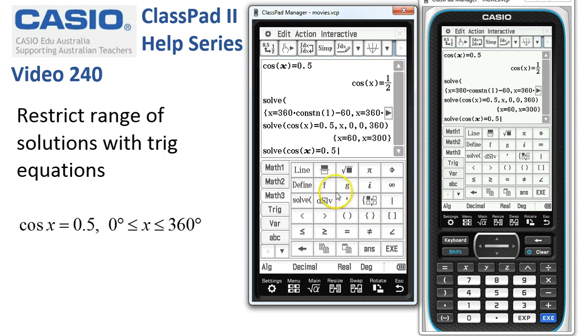You'll notice on the same Math 3 menu are all the inequalities. We want to solve this equation given that 0 ≤ x ≤ 360.